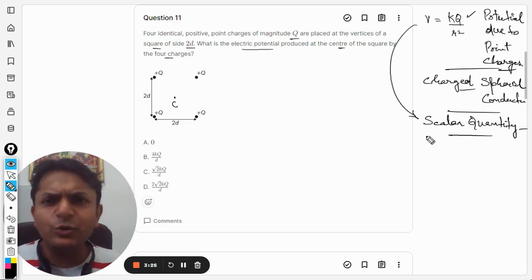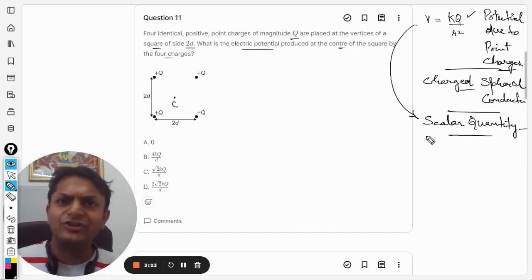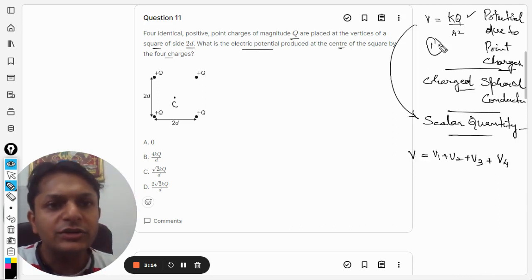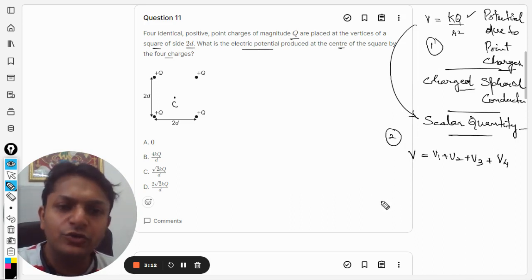They are scalar quantities, we are just going to add them like normal scalars. So our answer for the total potential will be v1 plus v2 plus v3 plus v4. So this is the second thing that you need to note.